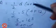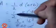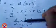Area of trapezium A equals half into d into (a + b), that is half into 5 into (4 + 12), which is 5 by 2 into 16, equal to 40 square centimeters. Therefore, the area of the trapezium equals 40 cm².